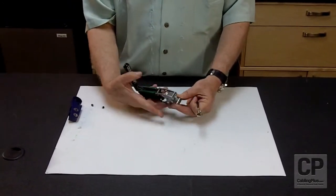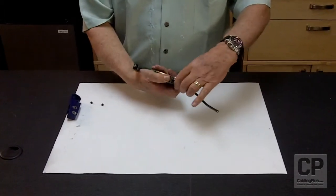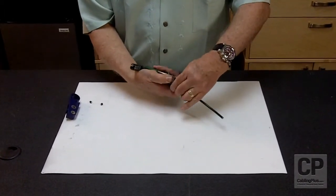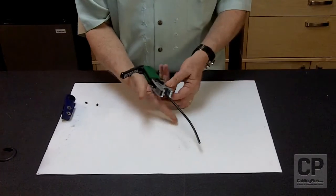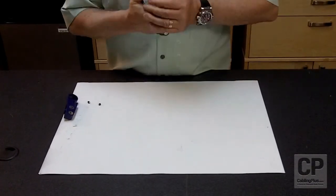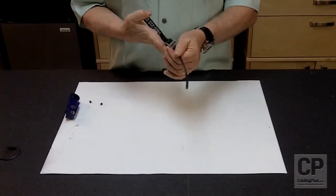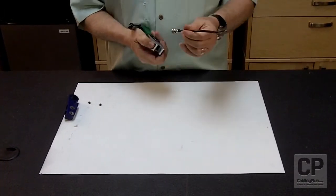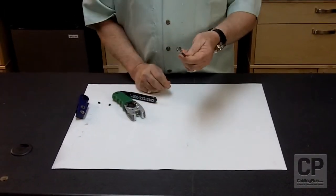Once you have the tool in your hand, you simply pull back the jaws, insert the connector into the jaws of the tool, release the jaws, and press down on the tool. Once you do that, simply undo the jaws, and your connector is complete.